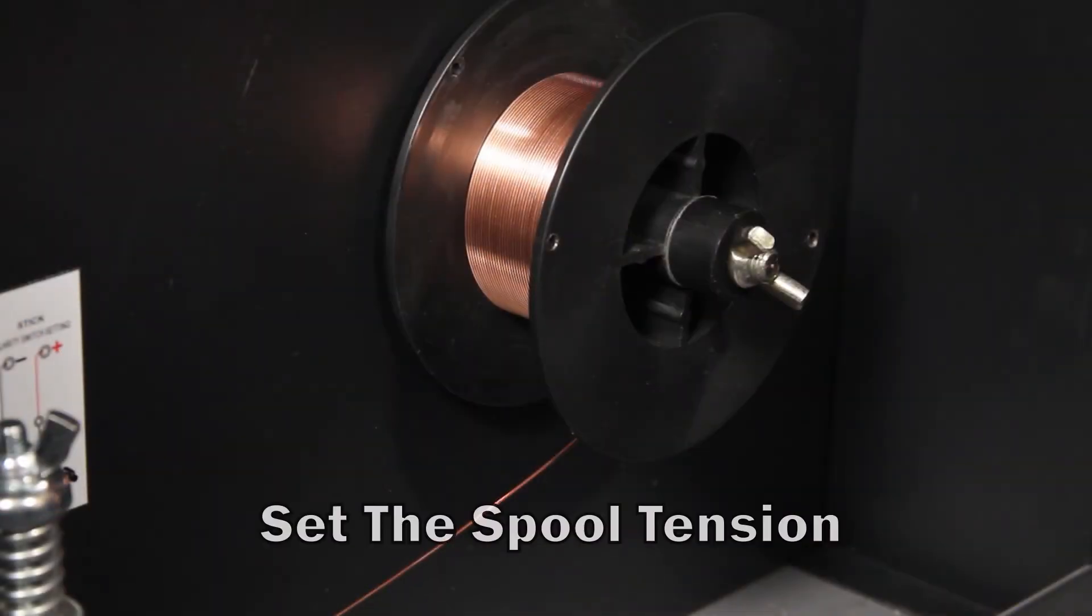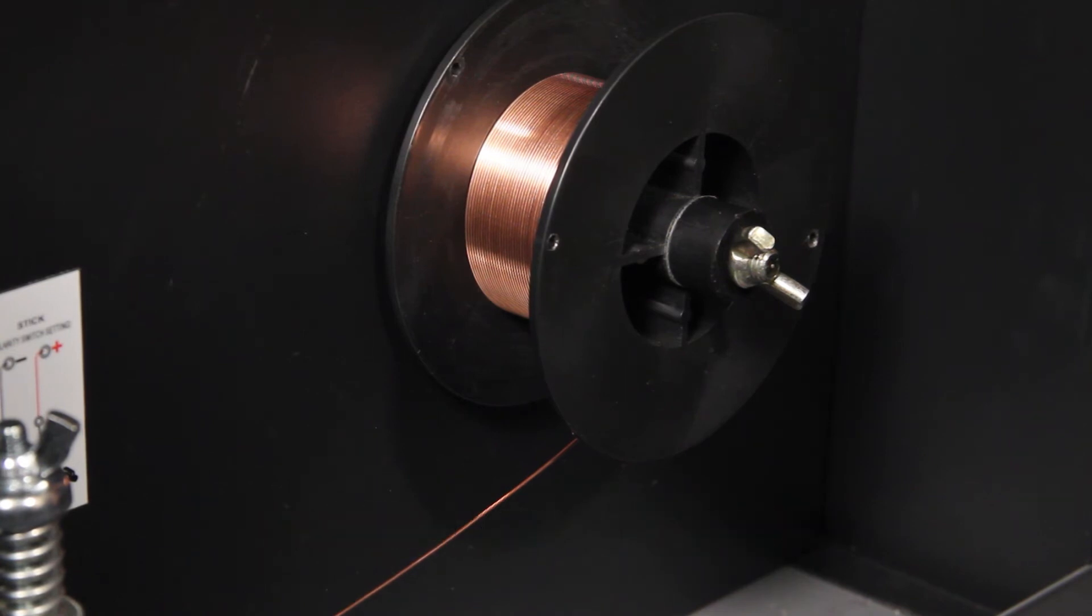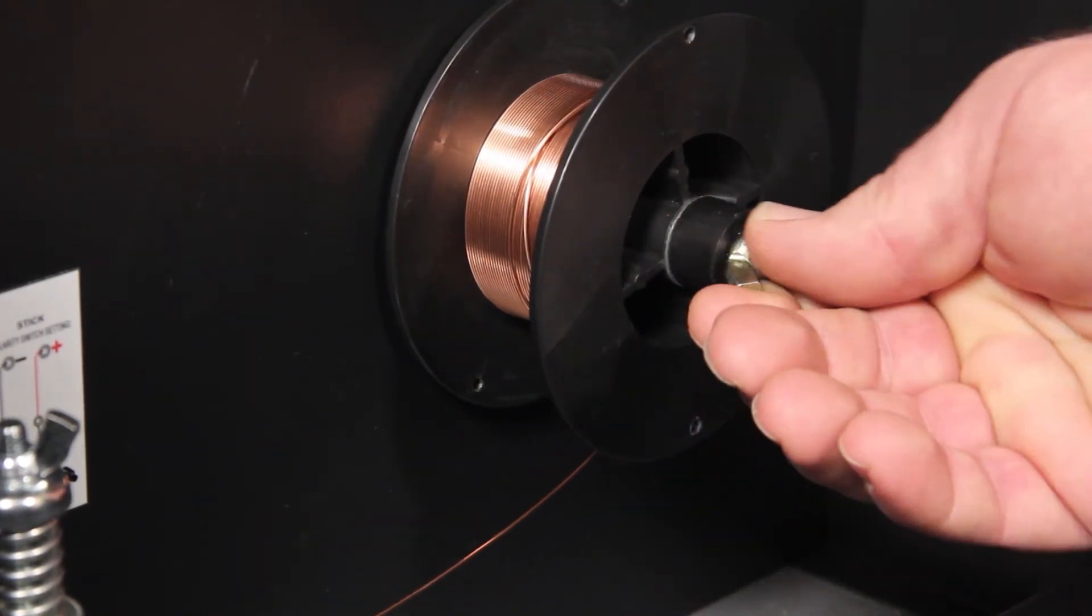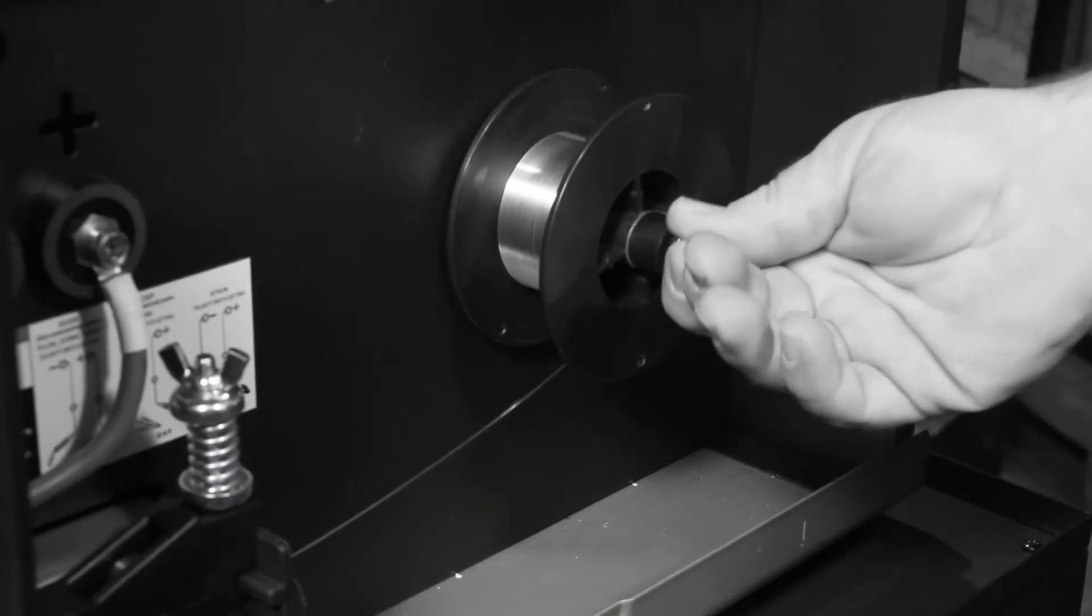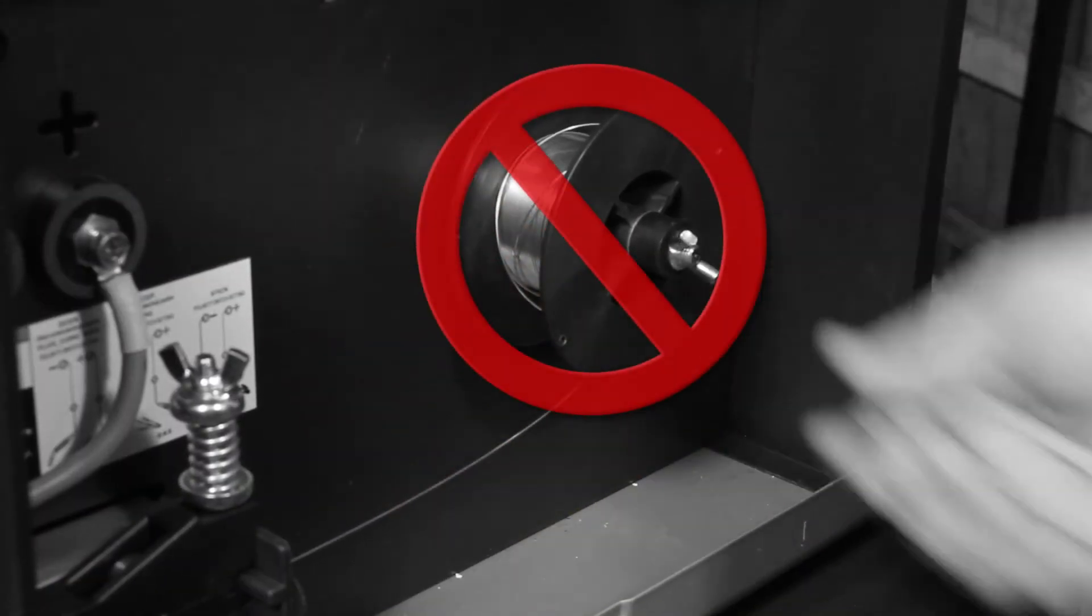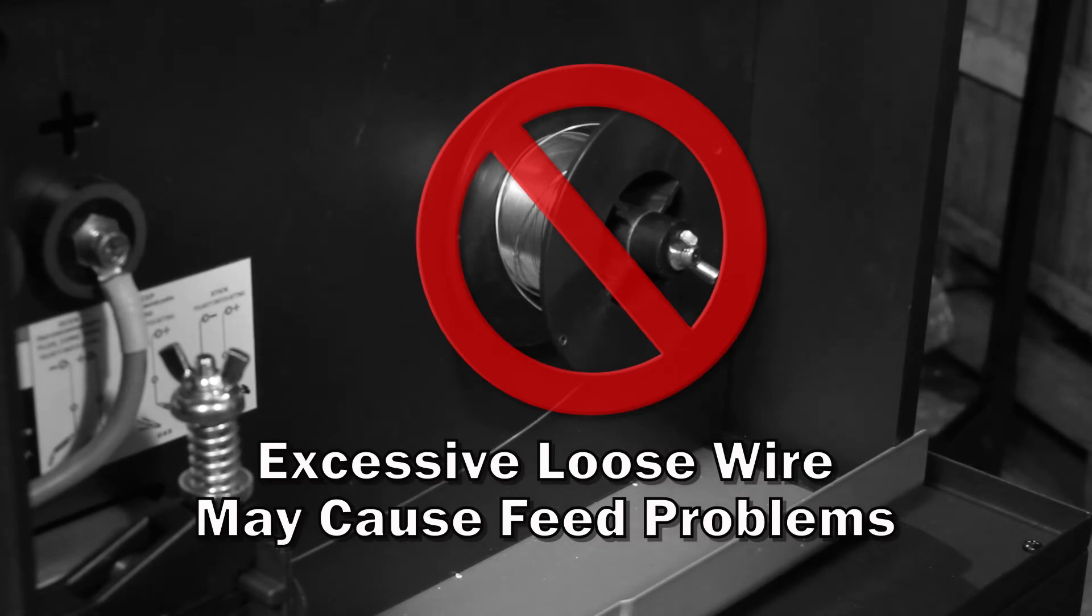To set the spool tension, loosen the tension control on the spool until the spool barely starts to unwind. Slightly tighten the spool tension until the spool stops spinning. When doing this operation, do not let the spool turn more than one half revolution. Excessive loose wire may cause feed problems.